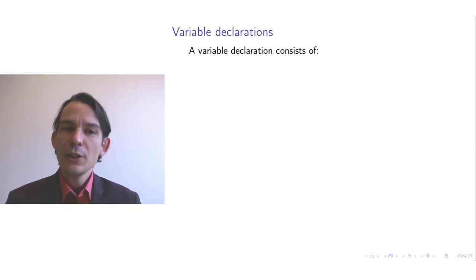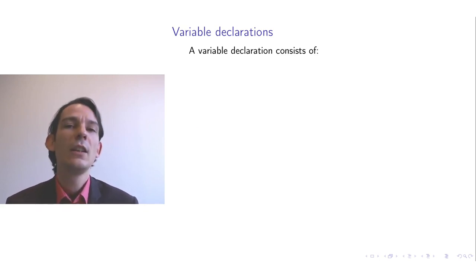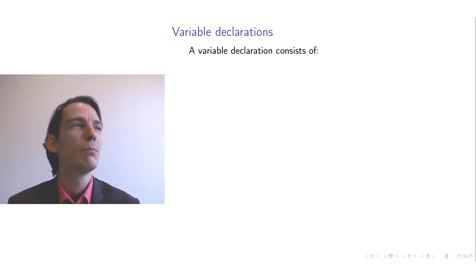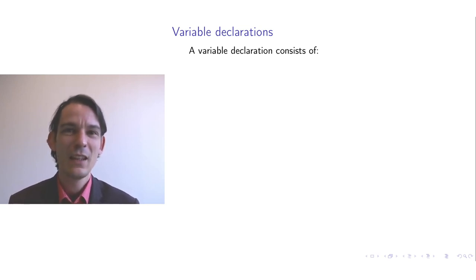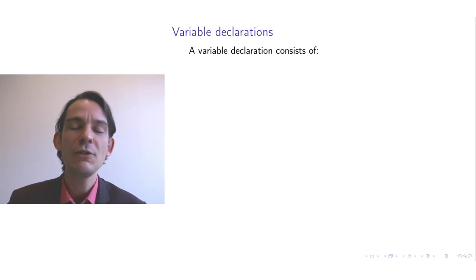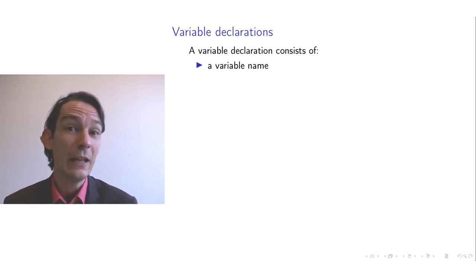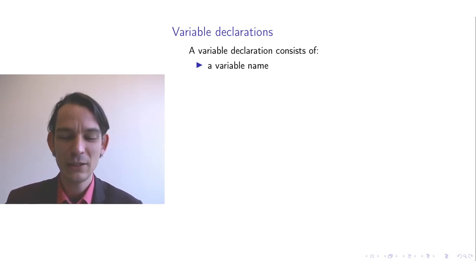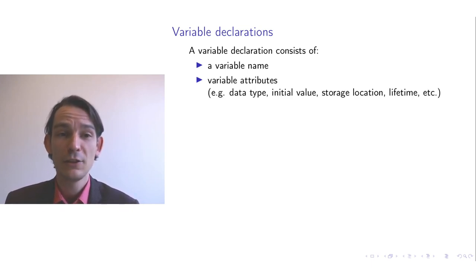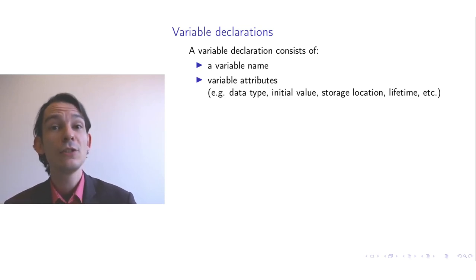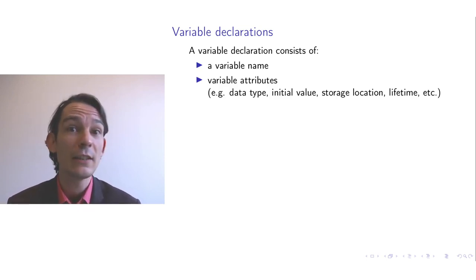A variable declaration is something you put in a programming language's program text to declare the existence of a variable. A variable declaration consists of the name of the variable you intend to declare, and moreover, you can annotate the declaration with attributes. In a previous video, you have seen some attributes, such as data type or the initial value of a variable.